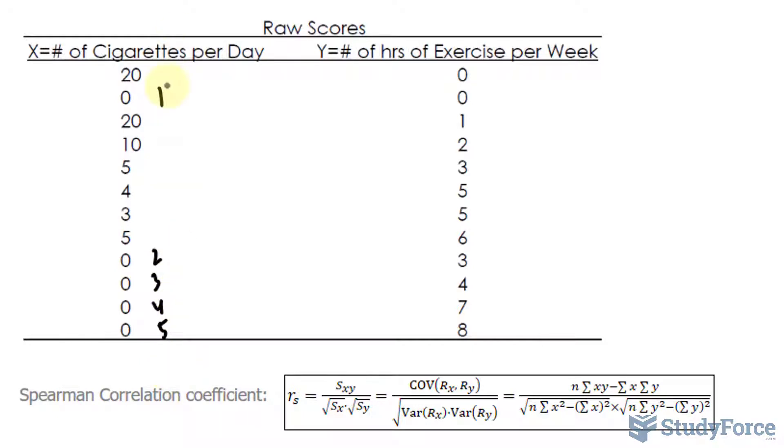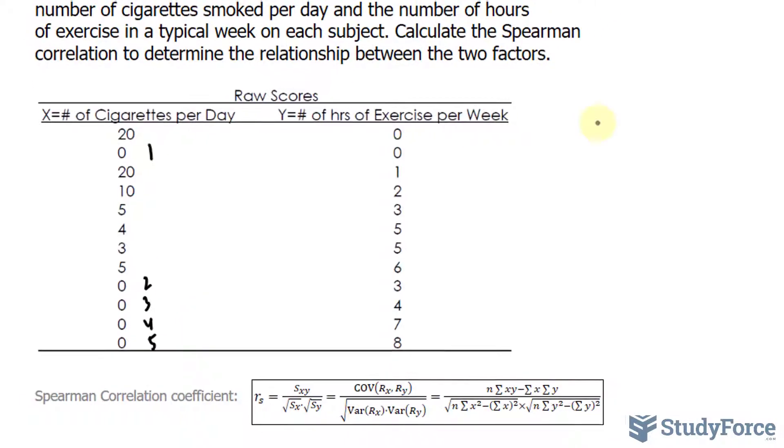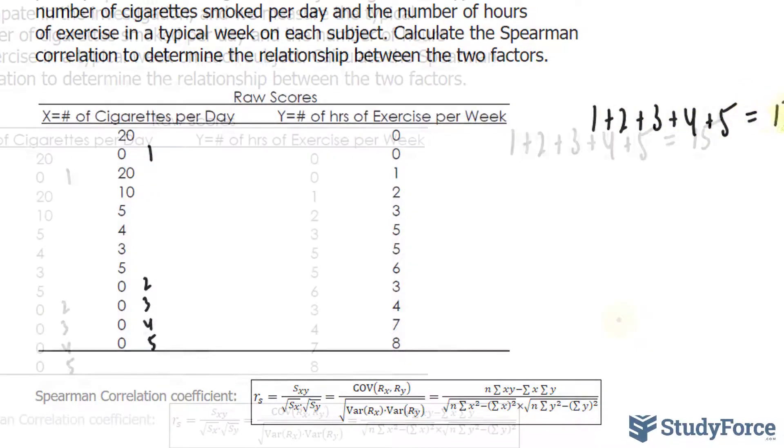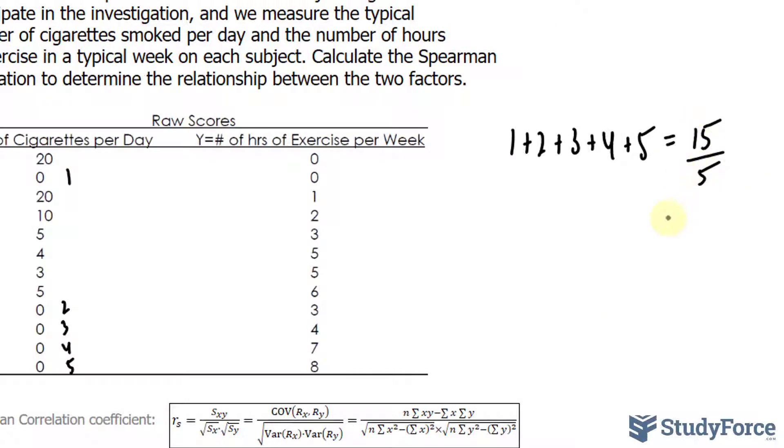Now they're all tied, so I can't designate this as rank one, rank two, and so on. What I will do is add up these ranks, one plus two plus three plus four plus five. That gives me a total of 15. And I divide this by the number of observations in that tie, which is five. This gives me a value of three. So this rank is three, three, three, and three.